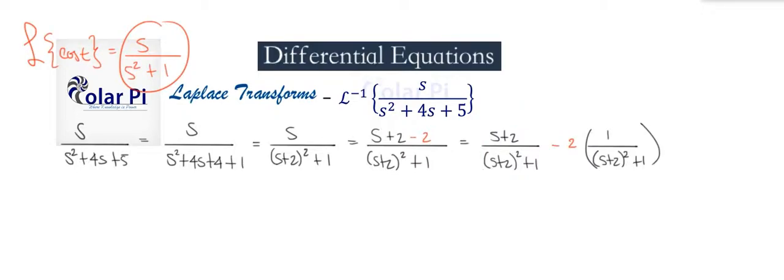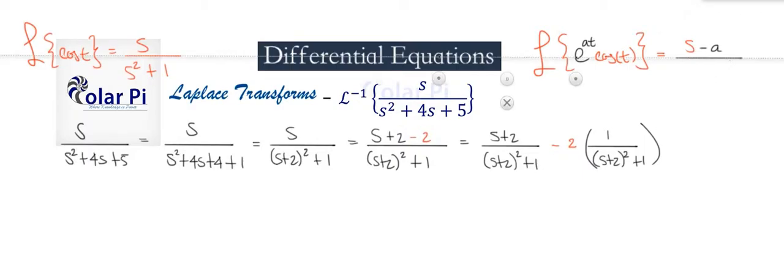We saw in another video that if we take the Laplace transform of e to the at times cosine t, that amounts to a horizontal shift by a. So this is the same thing as S minus a divided by (S - a) squared plus 1.